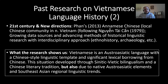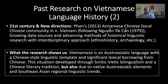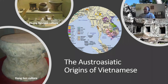The basic insight from all this research: Vietnamese is an Austro-Asiatic language with a Chinese-style linguistic template and significant lexical borrowing from Chinese. This situation developed through Sinitic-Vietic bilingualism — not yet Sino-Vietnamese — and a Chinese literary tradition. But it is also due to native Austro-Asiatic elements that have been retained, as well as Southeast Asian regional linguistic trends in which other languages also participated.